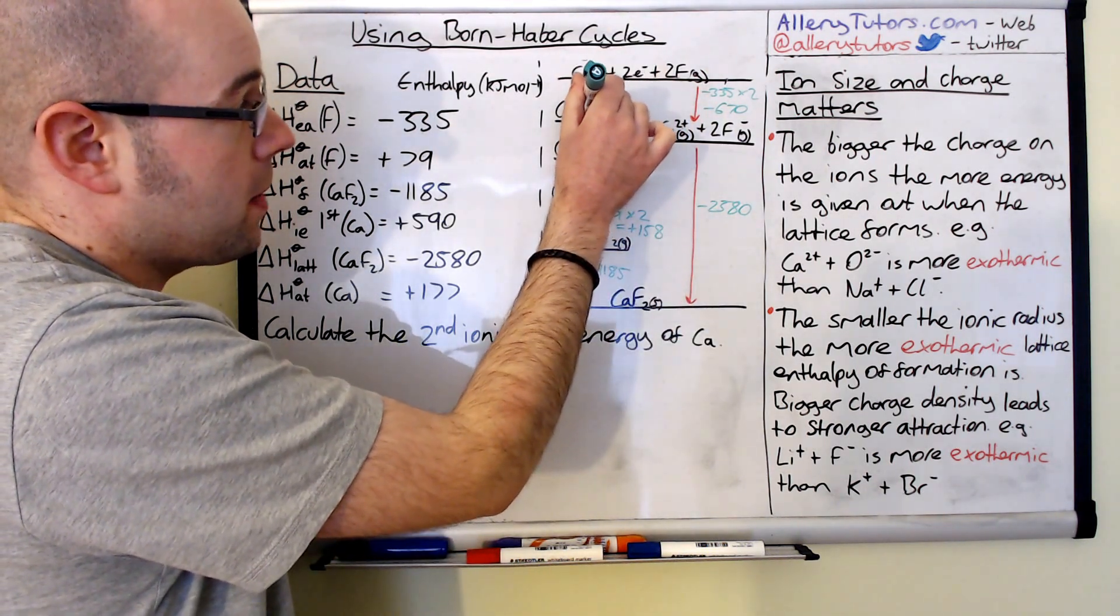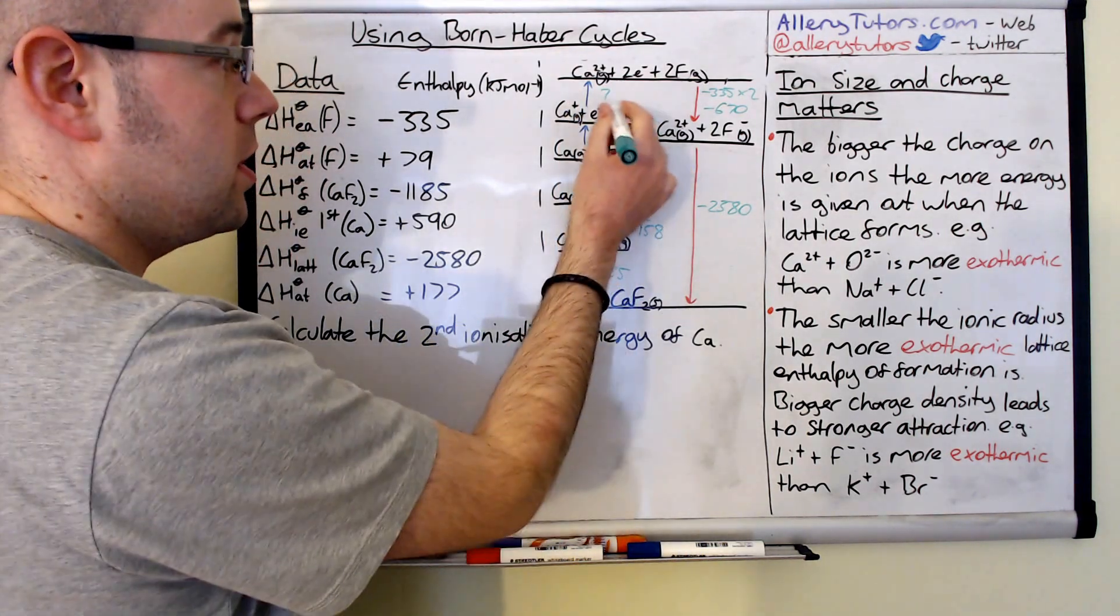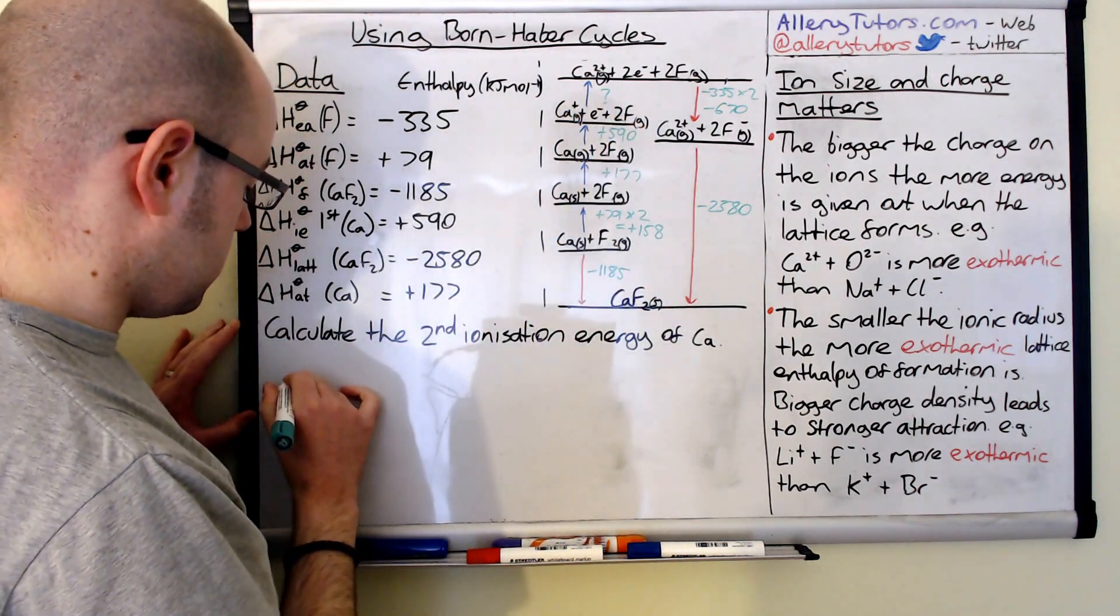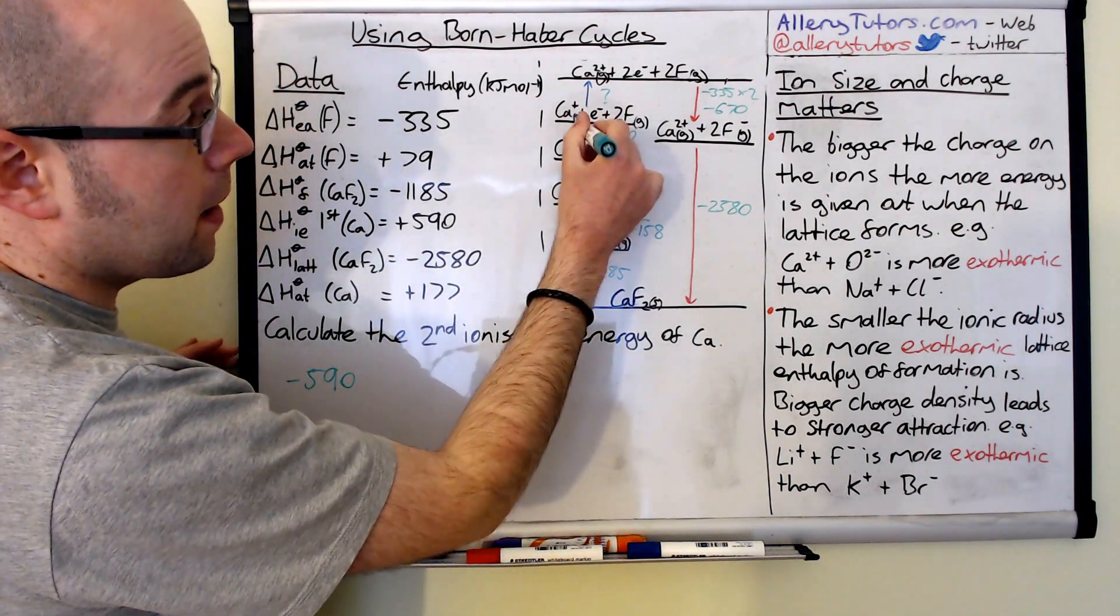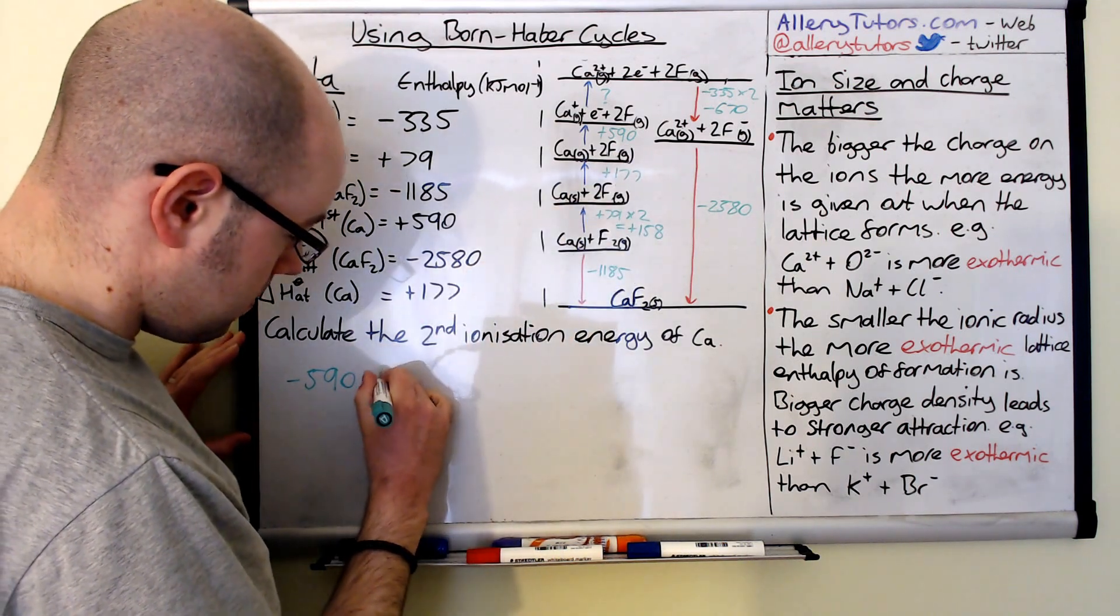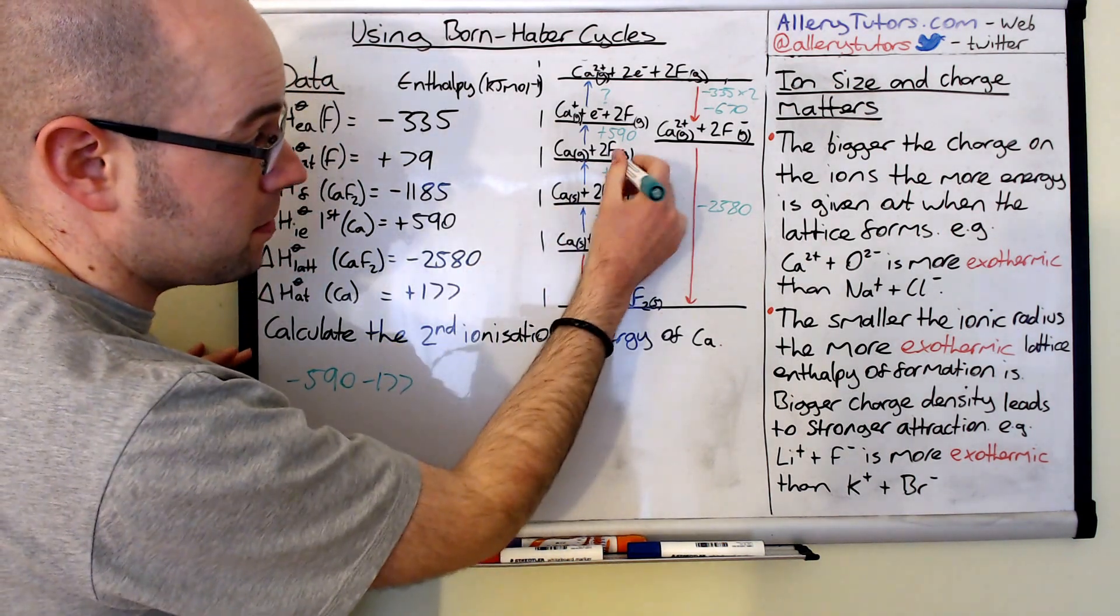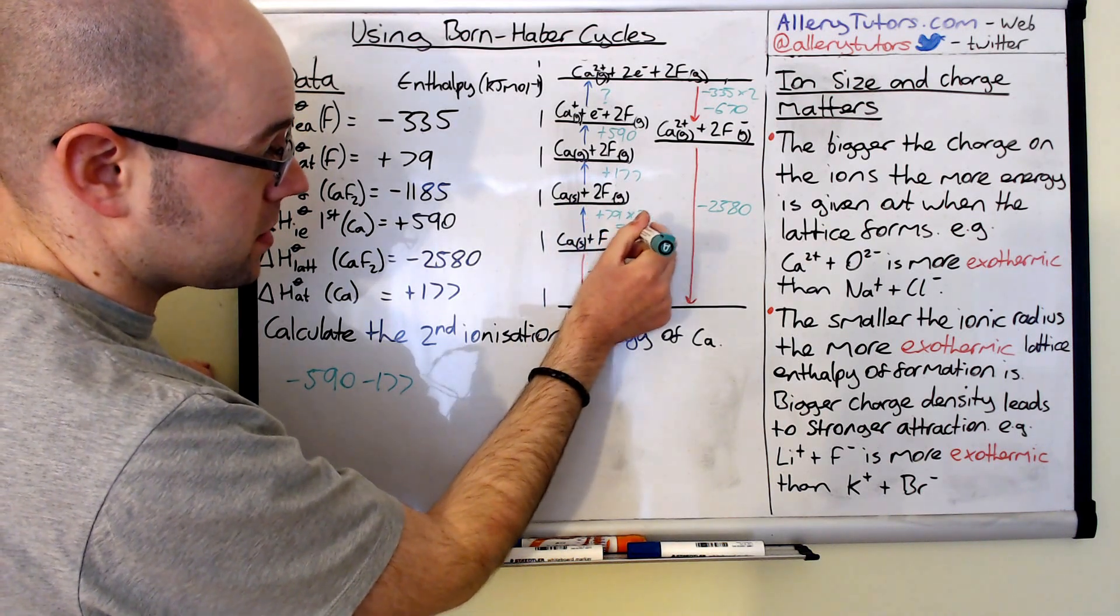So we're going to start from this point but we'll have to go down. So we're going against the arrow. So this number has to change. So that's plus 590. So this is going to be minus 590. We'll go in next step which is here and that's minus 177. Because we're going against the arrow keep the number the same to change the sign. So going against the arrow here so that's minus 158.